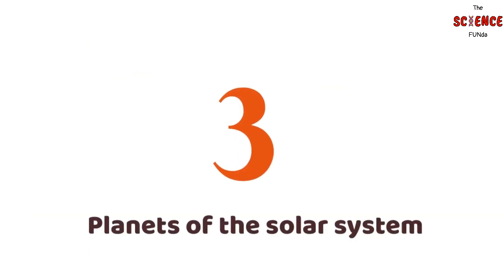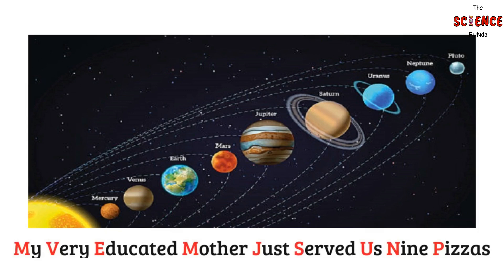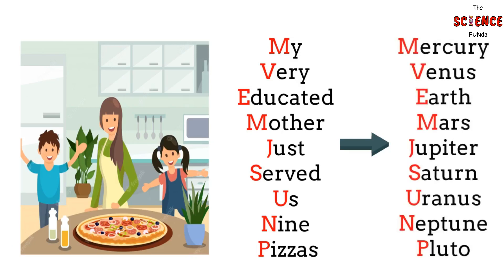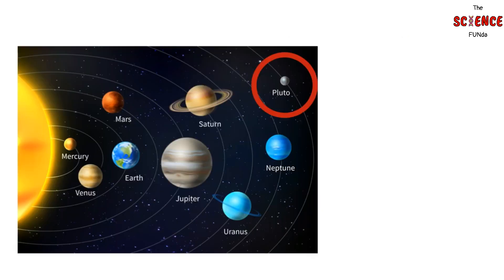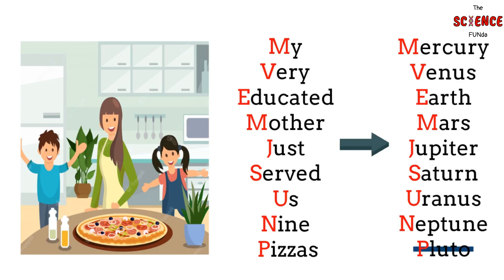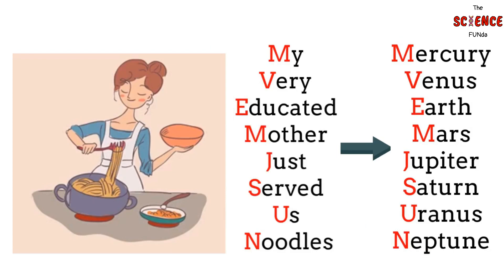Number 3: Planets of the Solar System. The name and order of the planets in the Solar System could be memorized using 'My Very Educated Mother Just Served Us 9 Pizzas,' referring to Mercury, Venus, Earth, Mars, Jupiter, Saturn, Uranus, Neptune, and Pluto. Since Pluto is considered a dwarf planet, there are only 8 official planets, so the new mnemonic can be 'My Very Educated Mother Just Served Us Noodles.'